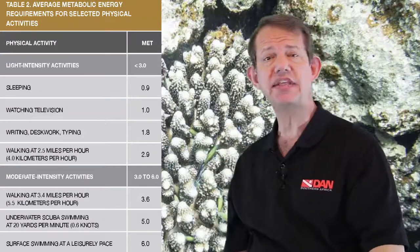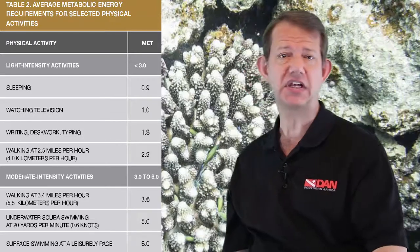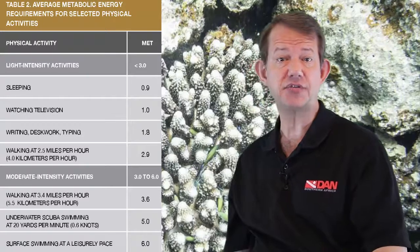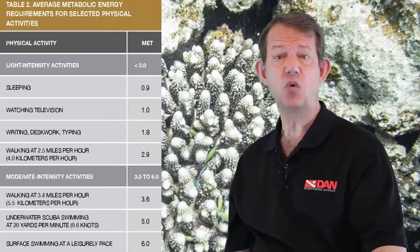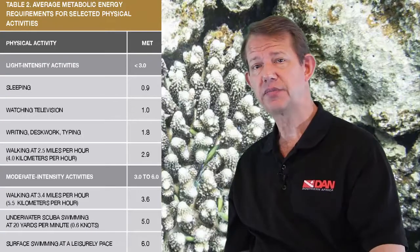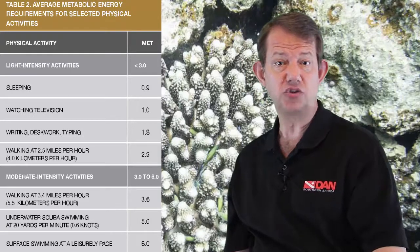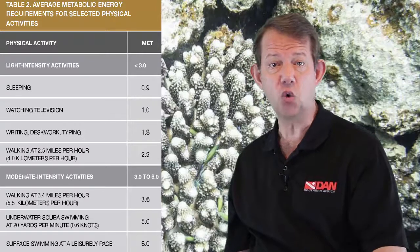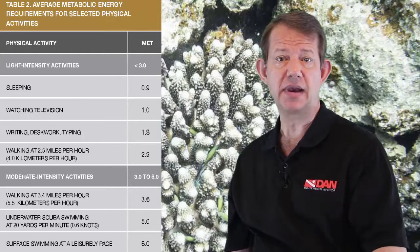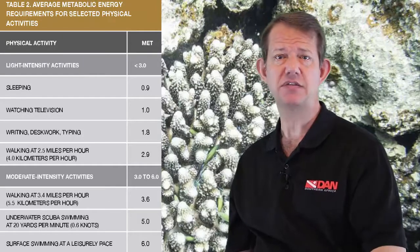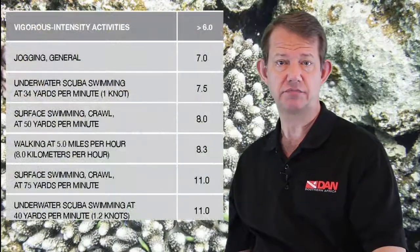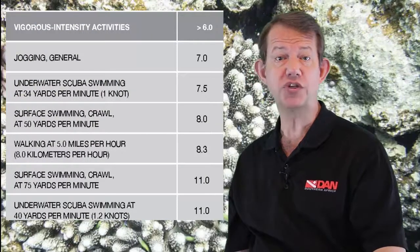In the table, you can see the average metabolic energy required for selected physical activities. Light intensity may be less than 3 METs — sleeping at 0.9, watching television at 1, writing or desk work and typing at 1.8, walking at about 2.5. Moderate activities range from 3 to about 6 METs depending on how quickly you walk. Underwater scuba swimming at about 0.6 knots, roughly 1.2 km per hour, is about 5 METs; surfer swimming leisurely around 6 METs. Vigorous activity is above 6 METs — jogging around 7, and underwater scuba swimming at about 2 km per hour at about 7.5 METs.